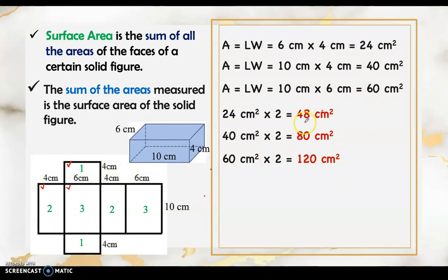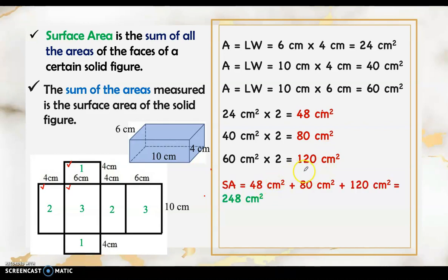The areas of the six faces are 48 square centimeters, 80 square centimeters, and 120 square centimeters. We add all these areas: 48 plus 80 plus 120 equals 248 square centimeters. Therefore, the surface area of this rectangular prism is 248 square centimeters.